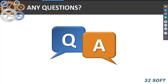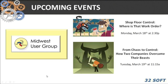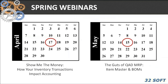Any questions? We have some upcoming events. Next week is the Midwest User Group Spring Conference — if you are attending, drop by our booth for a chat and to enter our drawing, or attend one of our presentations. On Monday, Dawn is presenting Shop Floor Control, 'Where is that work order?' And on Tuesday, we're joined by two clients to present our case study, 'From Chaos to Control.' We also have more educational webinars lined up — Dawn will return for both April and May for 'Show Me the Money' and 'The Guts of QAD MRP.' Registration is open, and links are available at the bottom of all our communications.